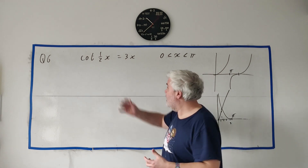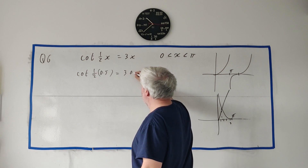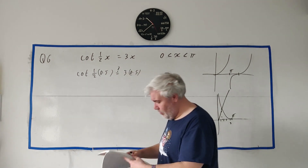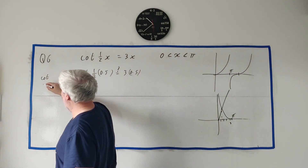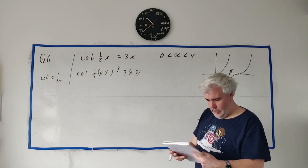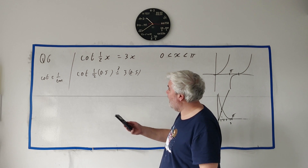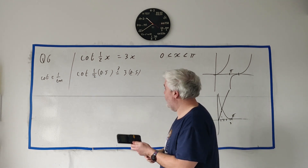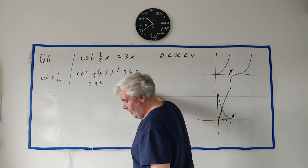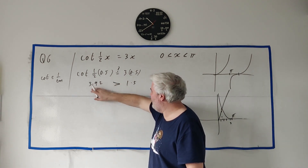So what I would do is just put 0.5 in: cotan of 0.5 equals 3 times 0.5, with a question mark. Remember cotan is the same as 1 over tan. Put that in your calculator and you get the left-hand side is 3.92 and the right-hand side is 1.5. So the left-hand side is not equal to the right — the left-hand side is bigger than the right-hand side.